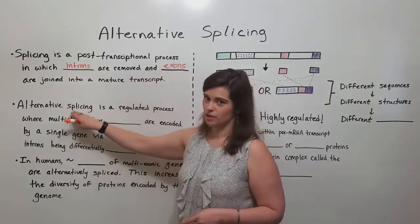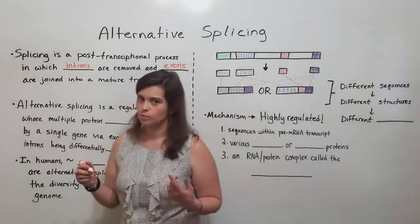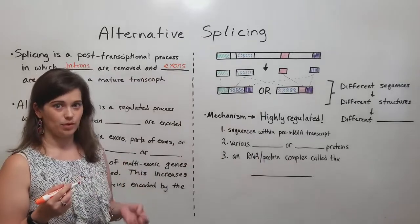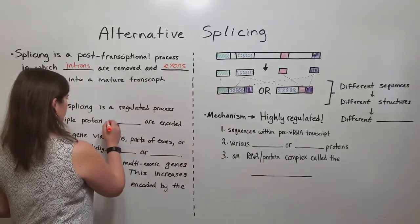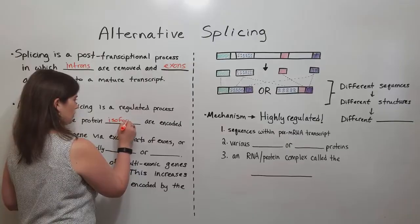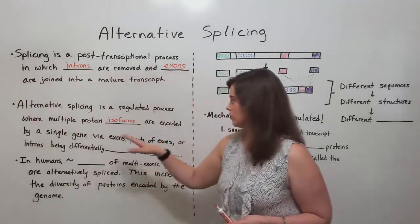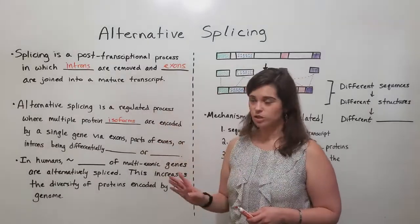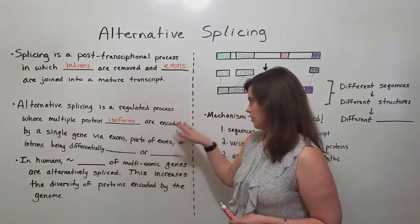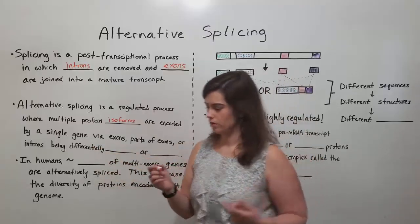Alternative splicing is a regulated process where multiple protein isoforms can come from the same pre-mRNA transcript. These multiple protein isoforms are encoded by a single gene via exons, parts of exons, or introns being differentially joined or skipped.